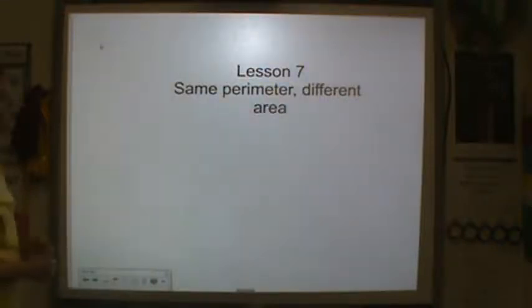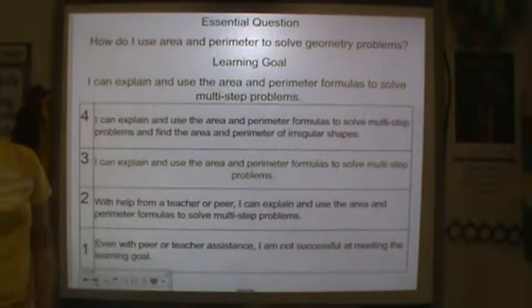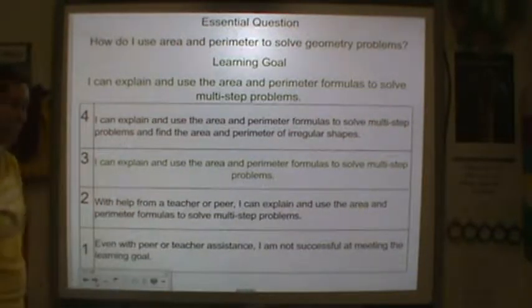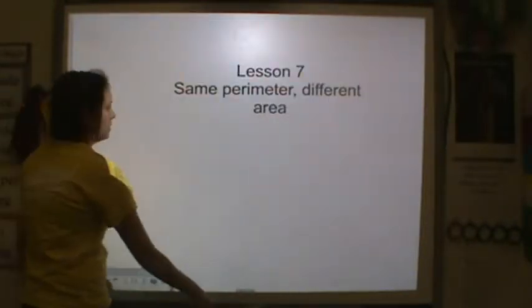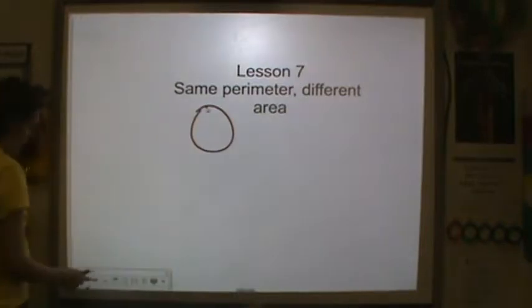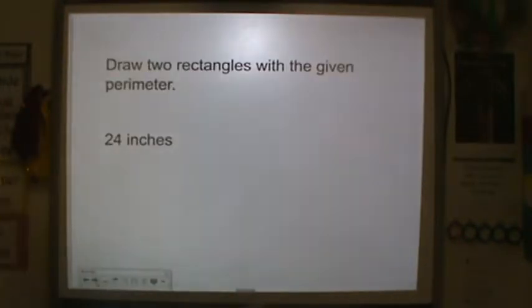We are on lesson 7, same perimeter, different area. Last time we did same area, different perimeter, so now we're doing the opposite. Before you go any further, please look at the learning goal and rate yourself. Circle your rating once you've done that, and let's get started.